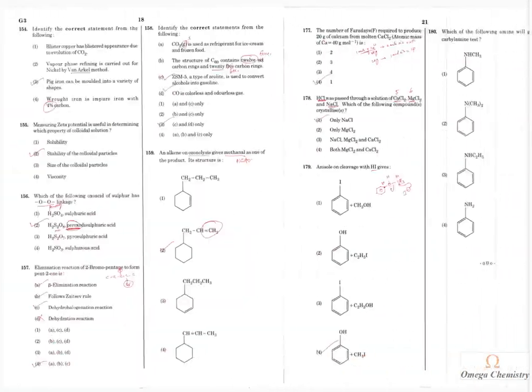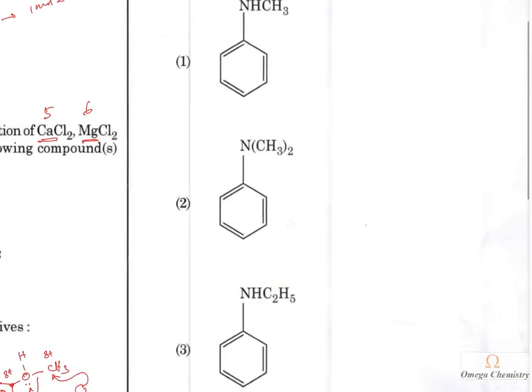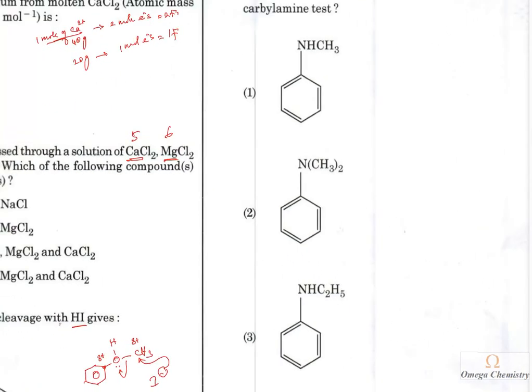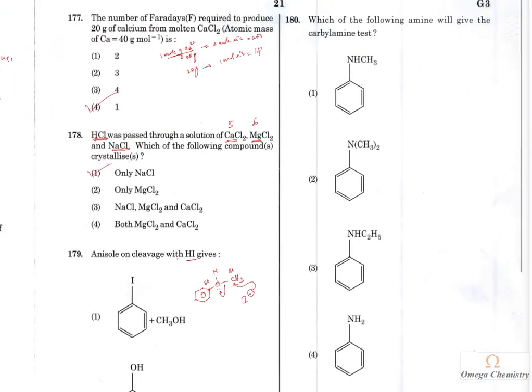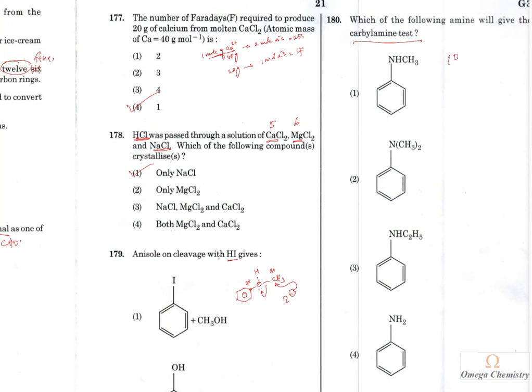Question 180: Which of the following amines will give the carbylamine test? The carbylamine test is given only by primary amines. Option 4 is the right answer because it is the primary amine. Thank you for patiently listening. I hope you did well and I wish you all the best. Please subscribe to my channel.